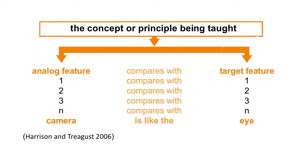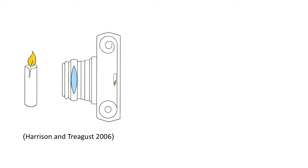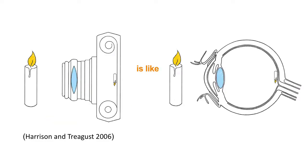For example, imagine the analogy of comparing an eye with a camera. The camera is like the eye. So you want to talk about the eye, you want to communicate how an eye works, and you're using the camera as a starting point.